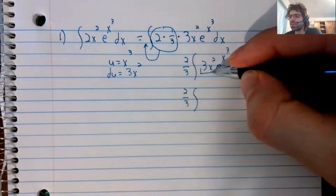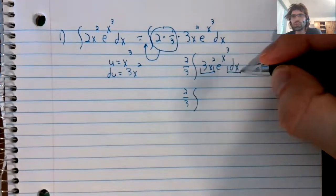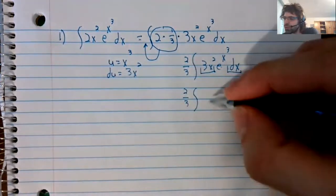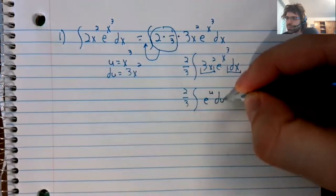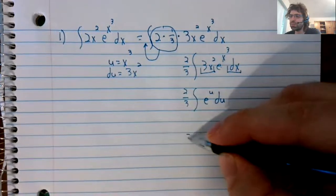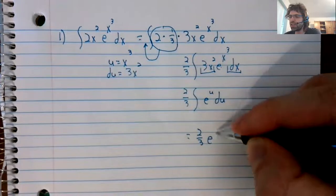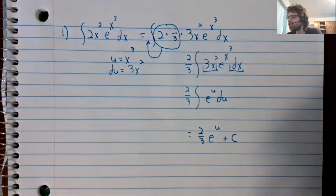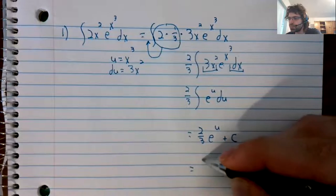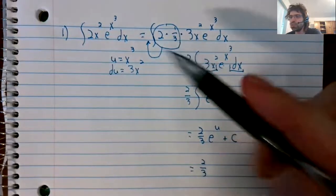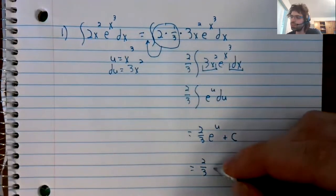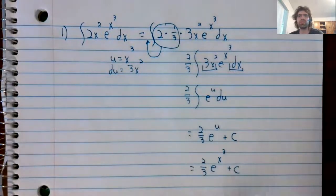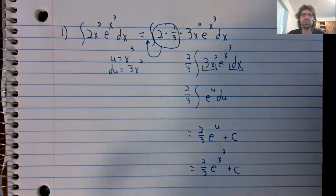And then do our substitution. These terms give us du, e to the x cubed is e to the u. The antiderivative of e to the u is e to the u. We've got our constant of integration. And u is x cubed. Two thirds e to the x cubed plus c.